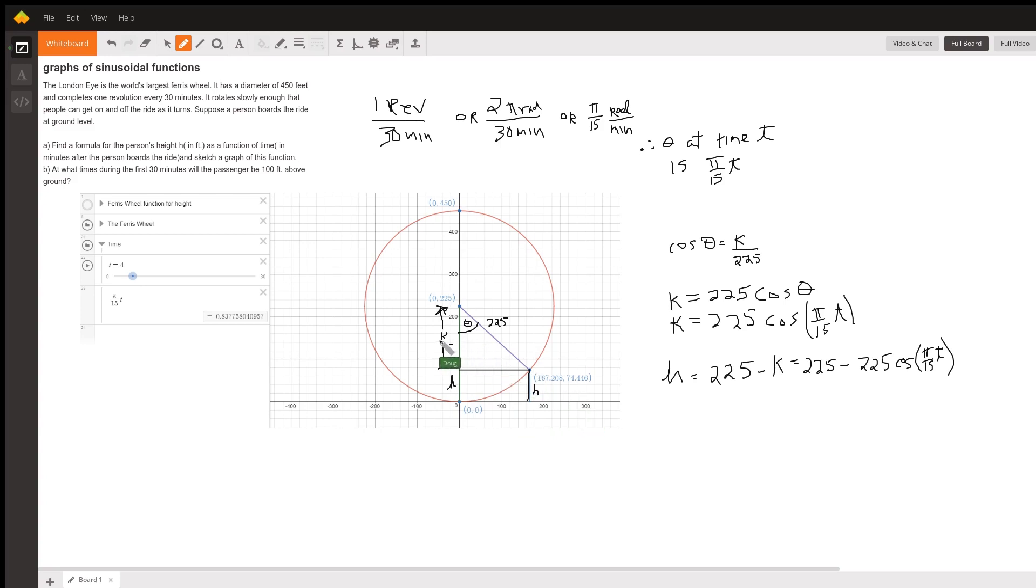How can we find the value of k? Well, we've got a right triangle. We've got one of its angles, at least in this first section here. We're dealing with some right triangle trigonometry.